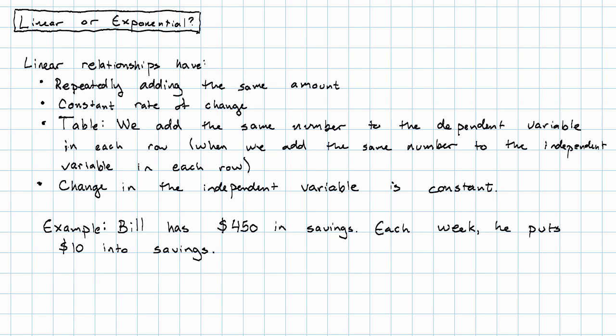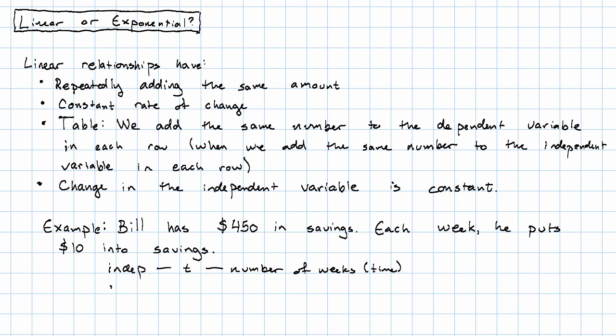So here's an example. Suppose Bill has $450 in savings and each week he puts $10 into savings. Our independent variable is the time, number of weeks, and our dependent variable is Bill's savings, in dollars of course.